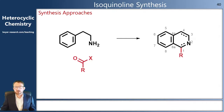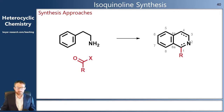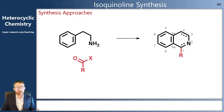To start off looking at isoquinolines, we're going to look at two synthesis approaches, both of which use the same general strategy. We will have an aromatic ring with an ethylamino sidechain, and we will build the heterocycle by the addition of one extra carbon in the form of a carbonyl — either an aldehyde or an amide.